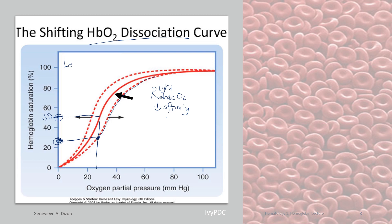The left shift is opposite to the right shift. With the same partial pressure of oxygen, there is a higher saturation compared to normal — because there is a higher affinity of hemoglobin to oxygen. We can say that in the left shift, hemoglobin loves oxygen.